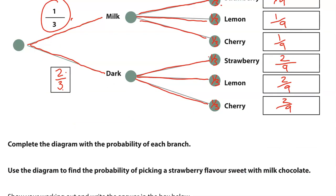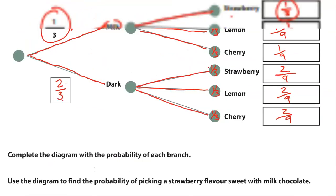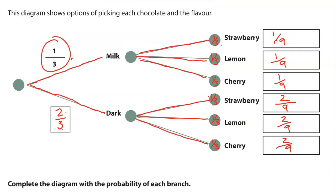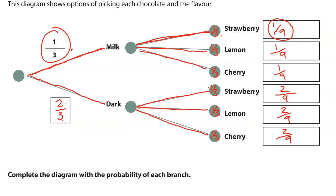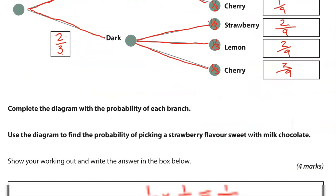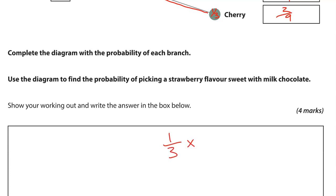Now, use the diagram to find the probability of picking a strawberry flavour sweet with milk chocolate. So milk and strawberry, we've already worked it out and it was 1 ninth by multiplying 1 third by 1 third. Always, when you're using a probability tree, you multiply when you go across, when you work out the probability of two different things or the combined probability. In this case, probability of being covered in milk chocolate as well as strawberry flavour centre. So 1 third times 1 third gives us 1 ninth, because 1 times 1 is 1, 3 times 3 is 9. And this is the end of the first part.